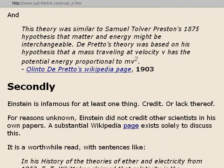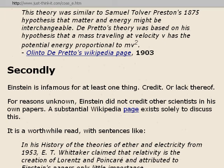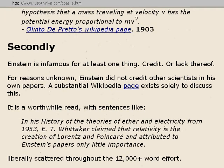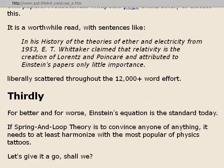Secondly, Einstein is infamous for at least one thing: credit, or lack thereof. For reasons unknown, Einstein did not credit other scientists in his own papers. A substantial Wikipedia page called Relativity Priority Dispute exists just to discuss this. It's a worthwhile read, with sentences like: E.T. Whitaker claimed that relativity is the creation of Lorentz and Poincaré, and attributed to Einstein's papers only little importance. About 12,000 plus words on that page debate the whole issue of credit and who came up with it first.